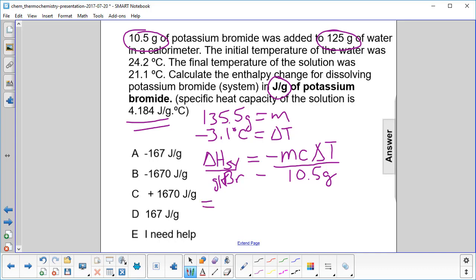We put the numbers in and our mass was 135.5 grams. I'm going to leave the units out here just to save a little time. 4.184 for the specific heat capacity. And our delta T is minus 3.1. We divide and there's a negative here in front, keep forgetting that guy, negative right there, and divide that by 10.5.